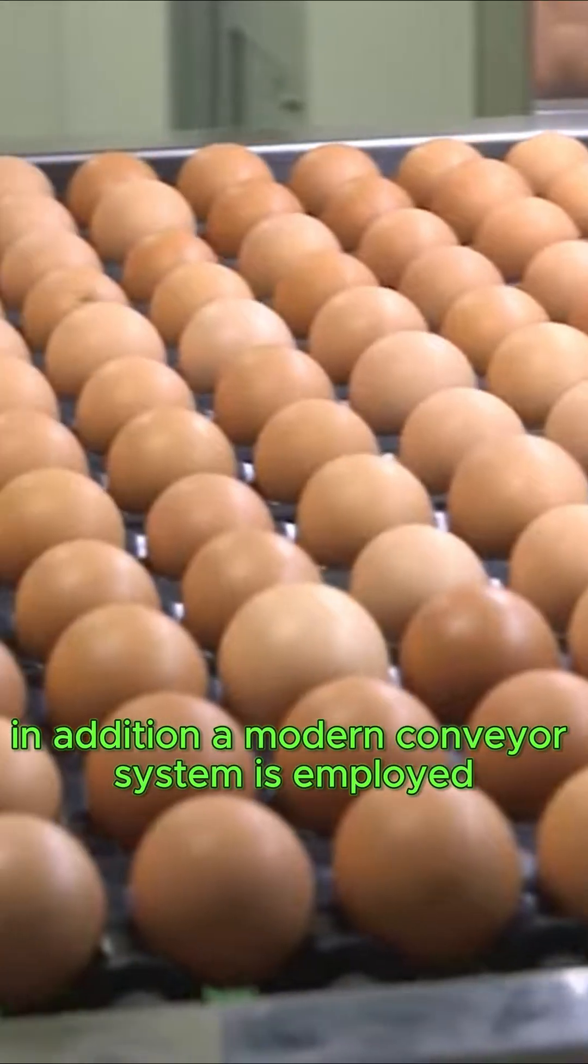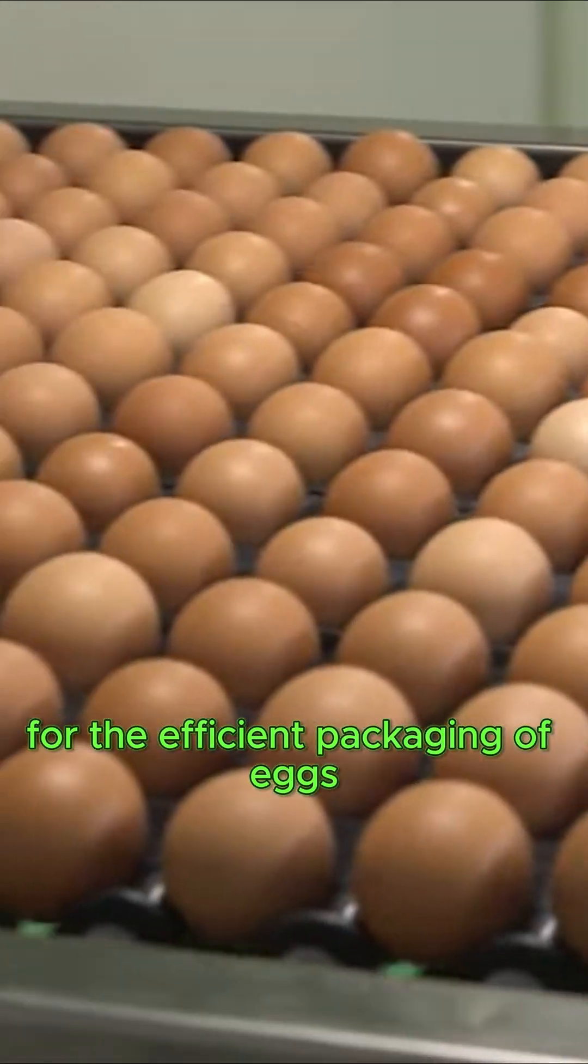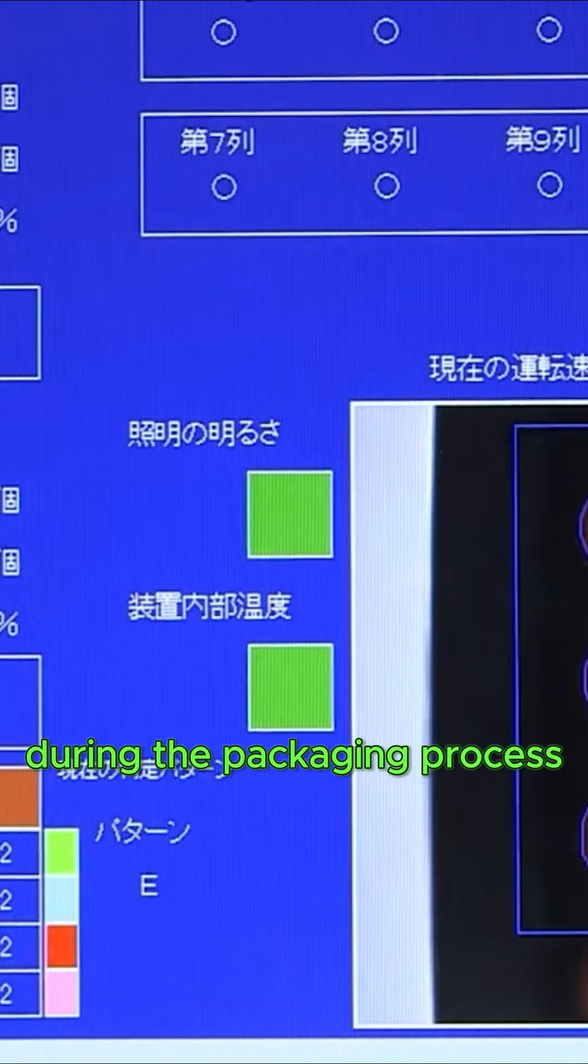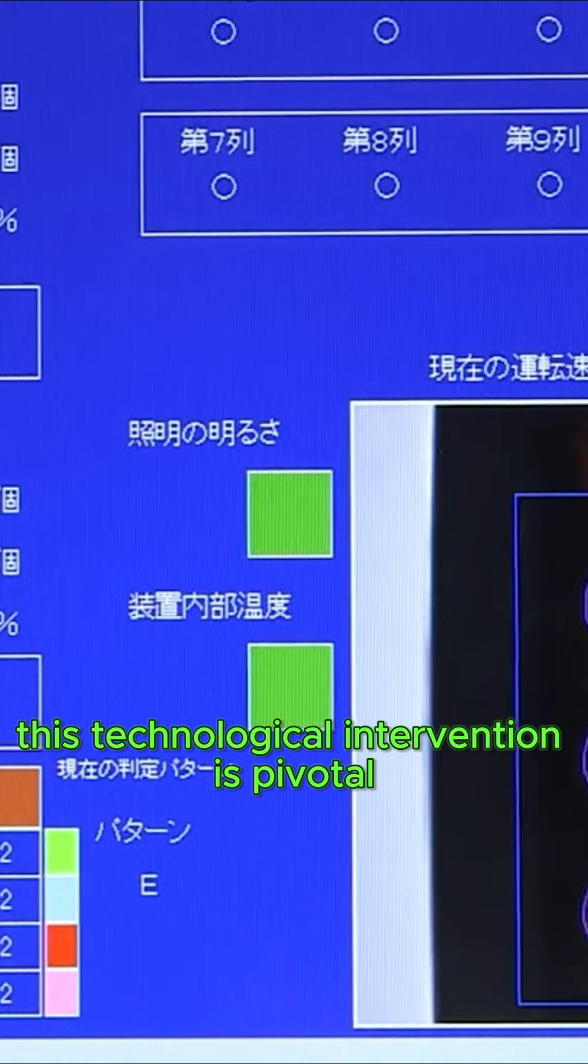In addition, a modern conveyor system is employed for the efficient packaging of eggs, which enhances both speed and accuracy during the packaging process. This technological intervention is pivotal in preserving the overall quality of the products.